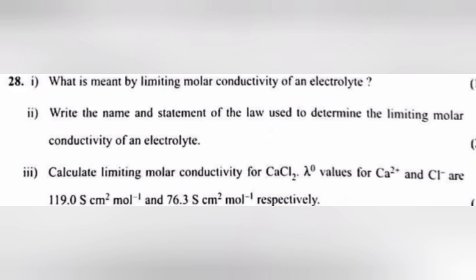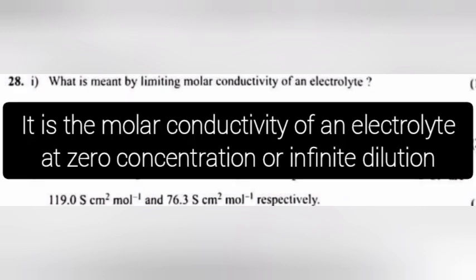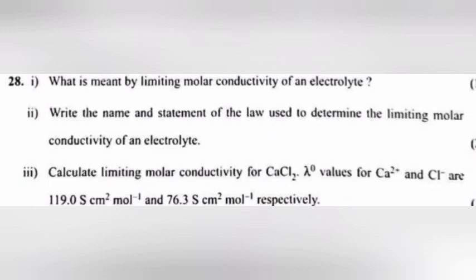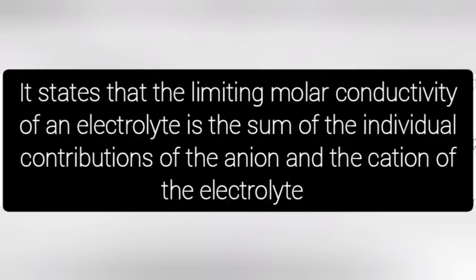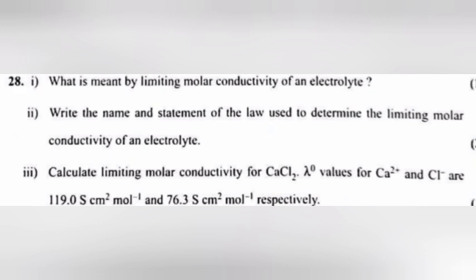Question 28.1: What is meant by limiting molar conductivity of an electrolyte? Answer: It is the molar conductivity of an electrolyte at zero concentration or infinite dilution. 28.2: Write the name and statement of the law used to determine limiting molar conductivity. Answer: Kohlrausch's law — it states that the limiting molar conductivity of an electrolyte is the sum of the individual contributions of the anion and the cation. 28.3: Calculate limiting molar conductivity for CaCl₂, given λ⁰ for Ca²⁺ = 119.0 S cm² mol⁻¹ and Cl⁻ = 76.3 S cm² mol⁻¹.